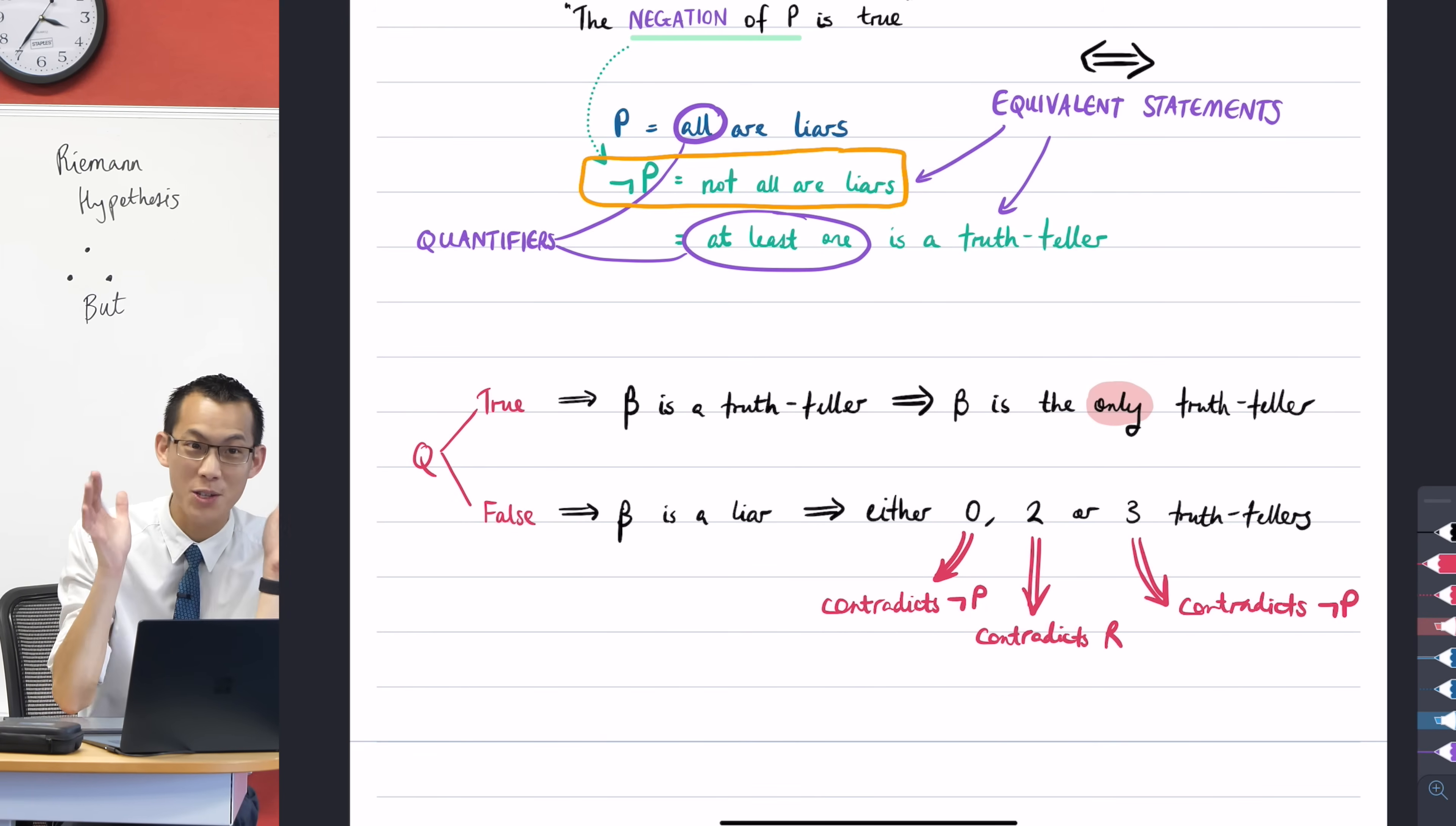So you see every possible thing that flows out of Q being false, they all lead to contradictions. So what does that mean? Can Q still be false? Q can't be false, because every single branch that comes out of it is a contradiction.